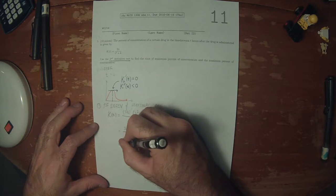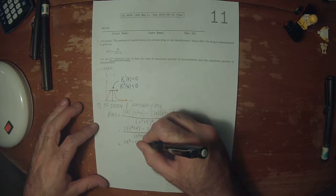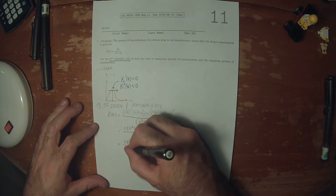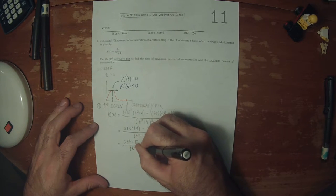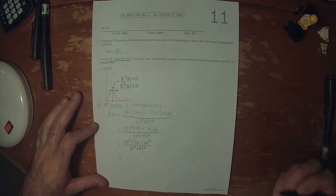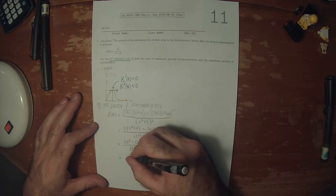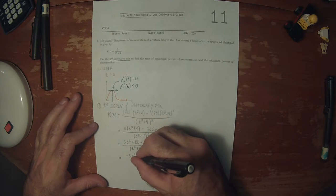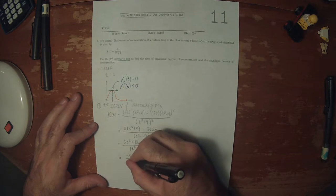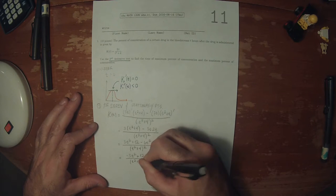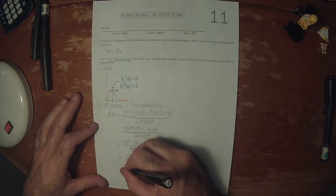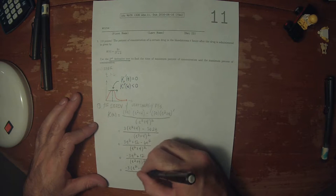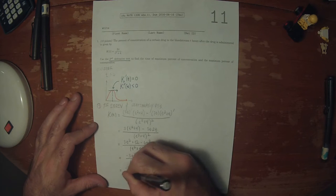So that's 3t squared plus 12, minus 6t squared, divided by t squared plus 4 squared, which is negative 3t squared plus 12 over t squared plus 4 squared. And then factor out negative 3: so negative 3 times t squared minus 4, over t squared plus 4 squared.